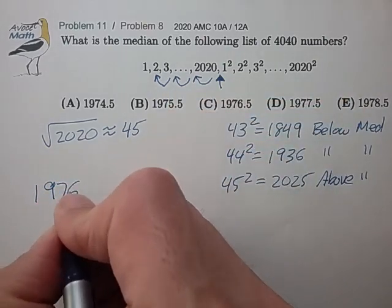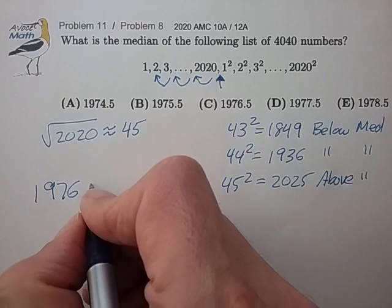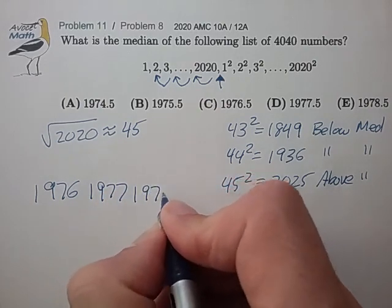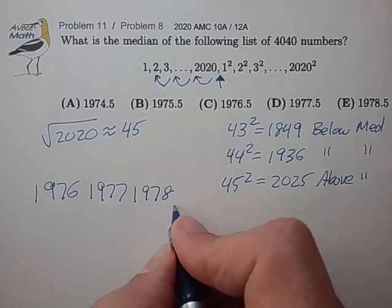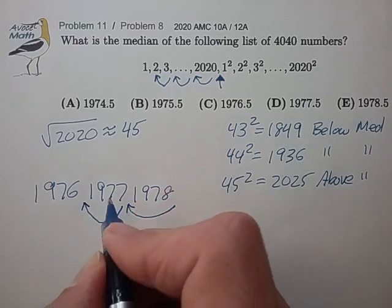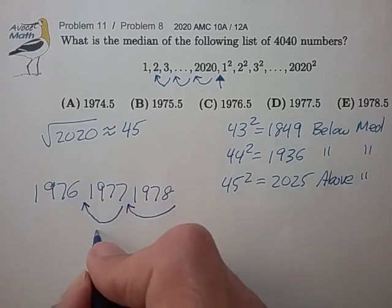you'll see that I'll have the numbers 1976, 1977, 1978. And so I think the 44th jump is going to take me from 1977 to 1976.